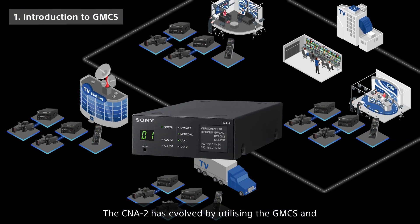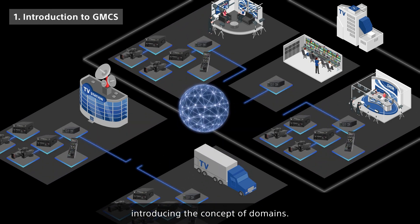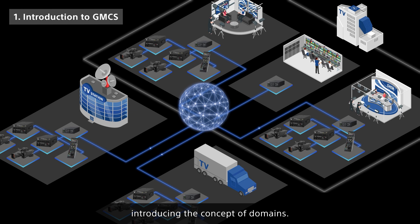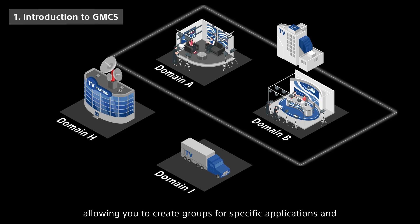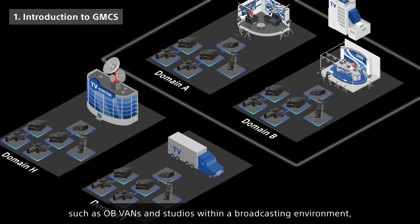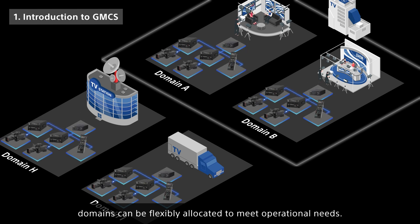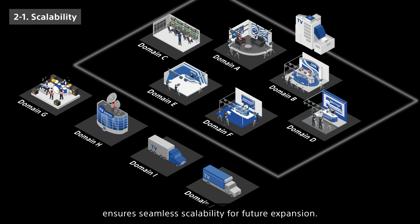The CNA2 has evolved by utilizing the GMC-S and introducing the concept of domains. Domains represent a logical division of the system, allowing you to create groups for specific applications and operate their equipment more efficiently. By deploying the CNA2 in locations such as OB vans and studios within a broadcasting environment, domains can be flexibly allocated to meet operational needs.